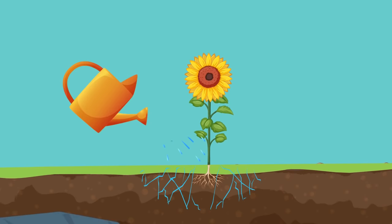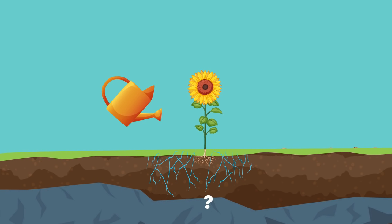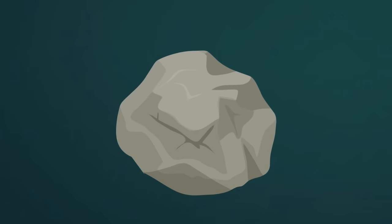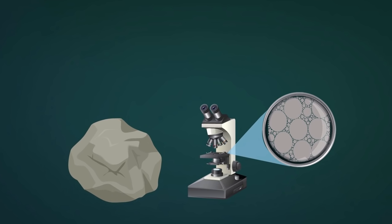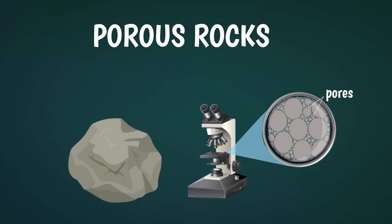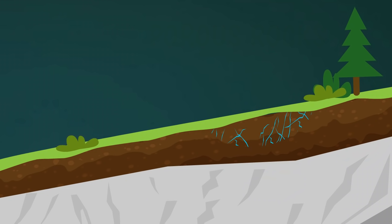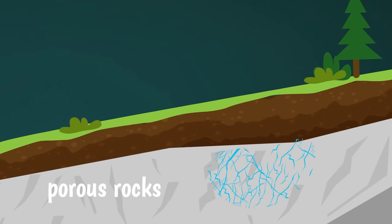But what happens when the water infiltrating downwards reaches the rocks that are under the topsoil? Well, it depends on what type of rock it finds. There are rocks that contain a lot of small holes, even though they are sometimes so small that you need a microscope to see them. These little holes are called pores, and rocks that have many pores are said to be porous. In general, when the rocks are porous, water can seep through the holes and continue its journey downwards.